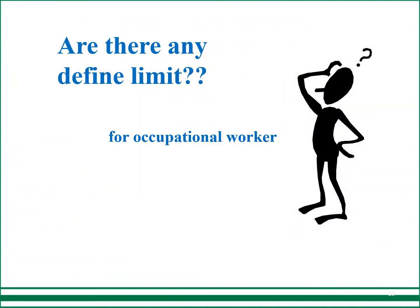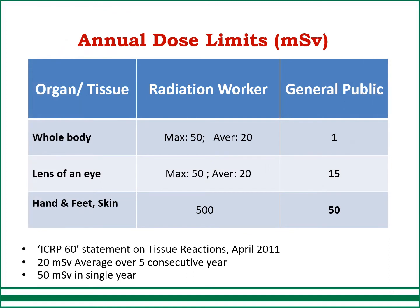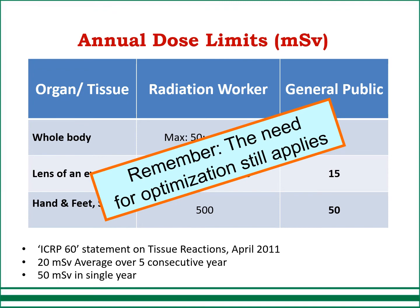Are there defined limits for occupational workers? Annual dose limits as defined by ICRP-60 — and other regulatory bodies have defined similar limits. For the whole body, a radiation worker's maximum is 50 millisievert in a single year, whereas the average over 5 consecutive years is 20 millisievert. For the general public it is 1 millisievert. For the lens of the eye, the general public limit is 15 millisievert. Limits also apply to hands, feet, and skin. For pregnant women, remember that the need for optimization still applies.